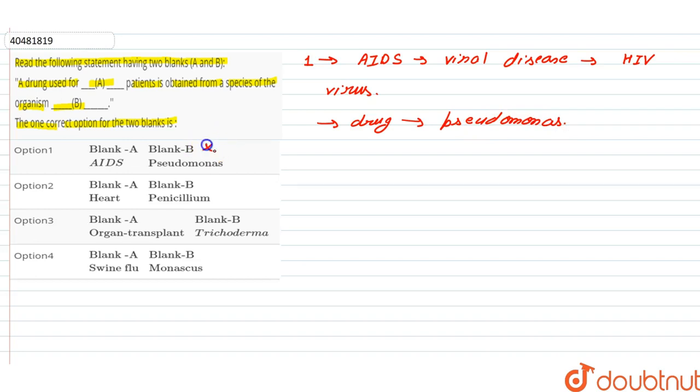Now we will check the second option. Here we have heart and drug used for heart. If we talk about heart related disease, then we will not cure them, we will not use penicillium. So this is an incorrect answer.